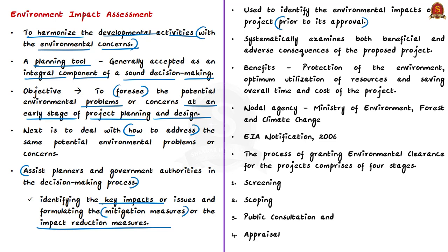There are many benefits of considering environmental effects and mitigation early in the project planning cycle, such as protection of the environment, optimum utilization of resources, and saving overall time and cost. The Ministry of Environment, Forest and Climate Change is the nodal agency for environmental clearance rules. It made EIA and environmental clearance mandatory through its 1994 notification under the Environment Protection Act of 1986. Subsequently, after a decade of experience in the clearance process, the Ministry brought out the Environment Impact Assessment notification in September 2006, which defines the process of granting environmental clearance.